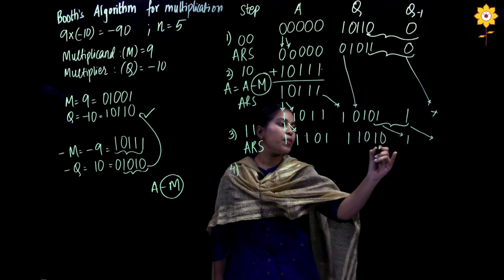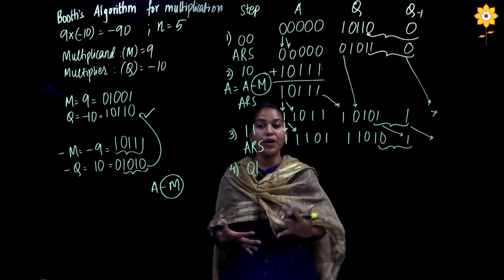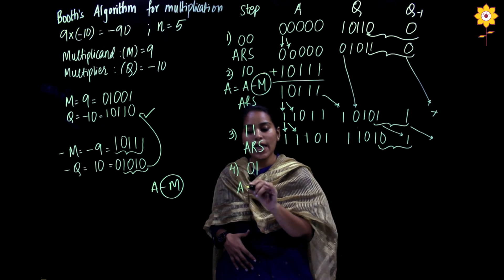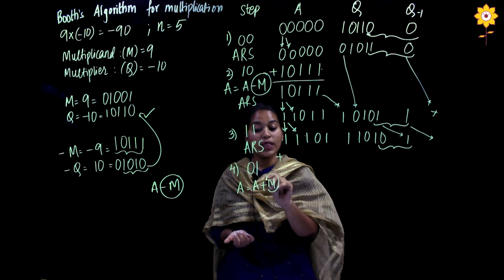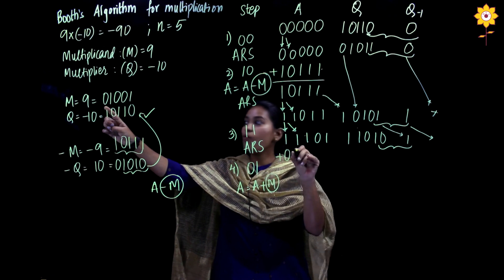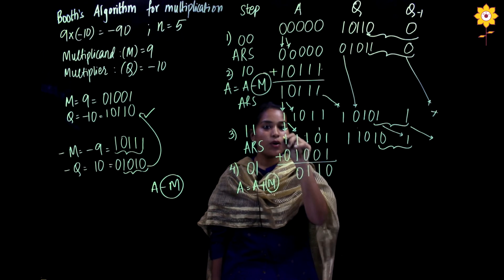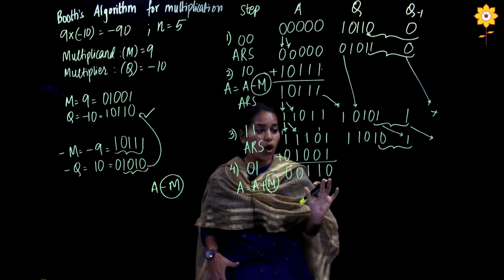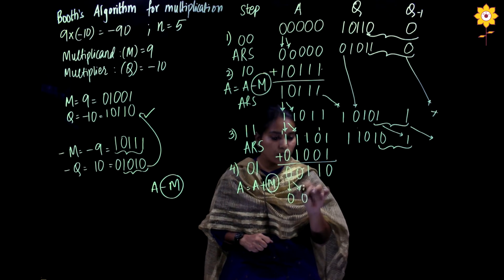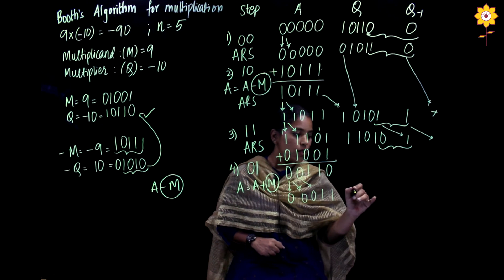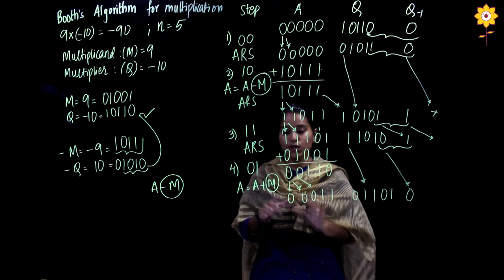Step 4: Compare Q0 and Q minus 1 — the combination is 0 and 1. When it is 0 and 1, we do A plus M. The accumulator content is added with M (which is 9, or 01001). We perform the binary addition, discarding any carry generated beyond 5 bits. After the addition the result is saved back into the accumulator. Then we perform an arithmetic right shift. Step 4 is done.